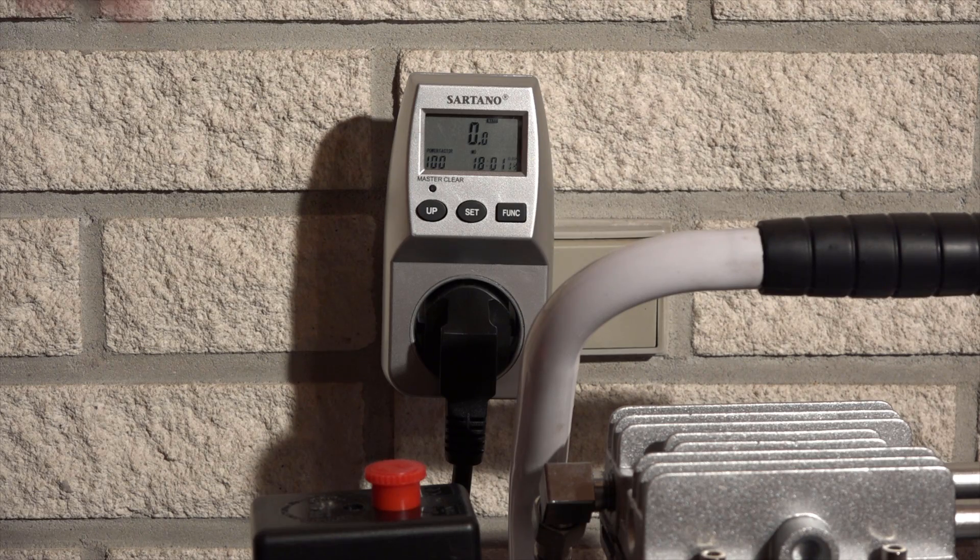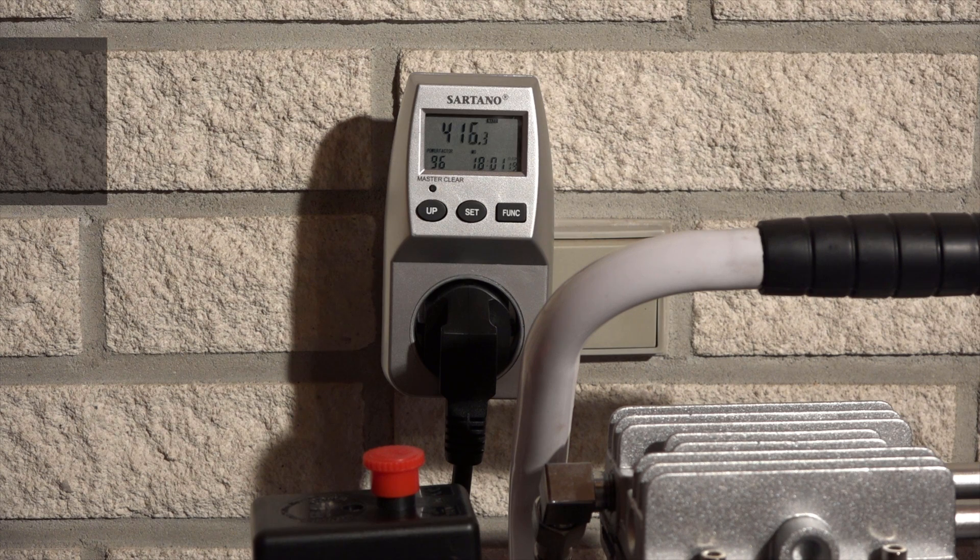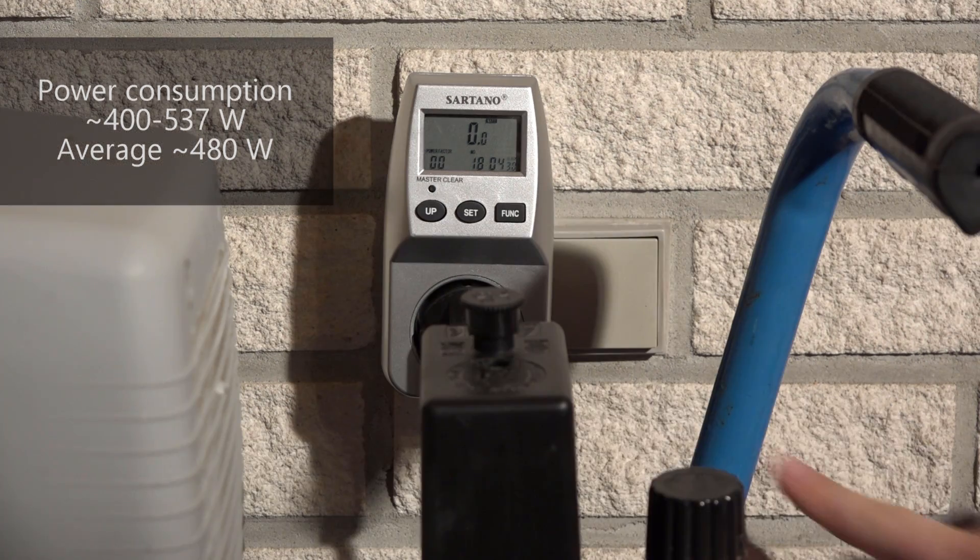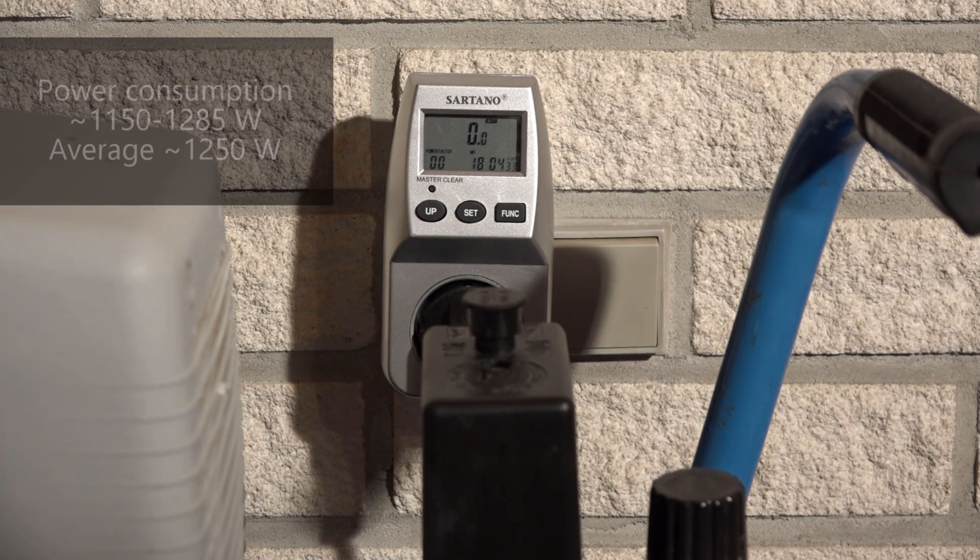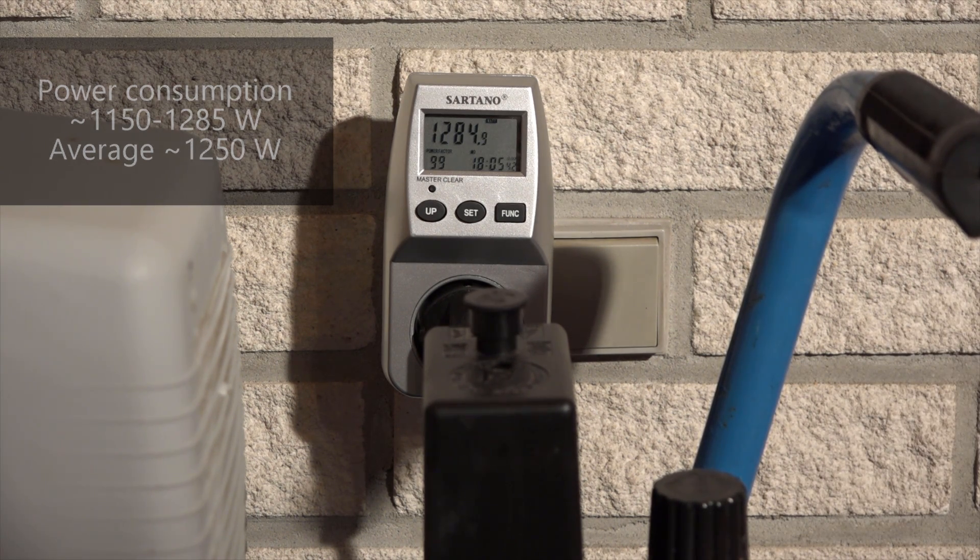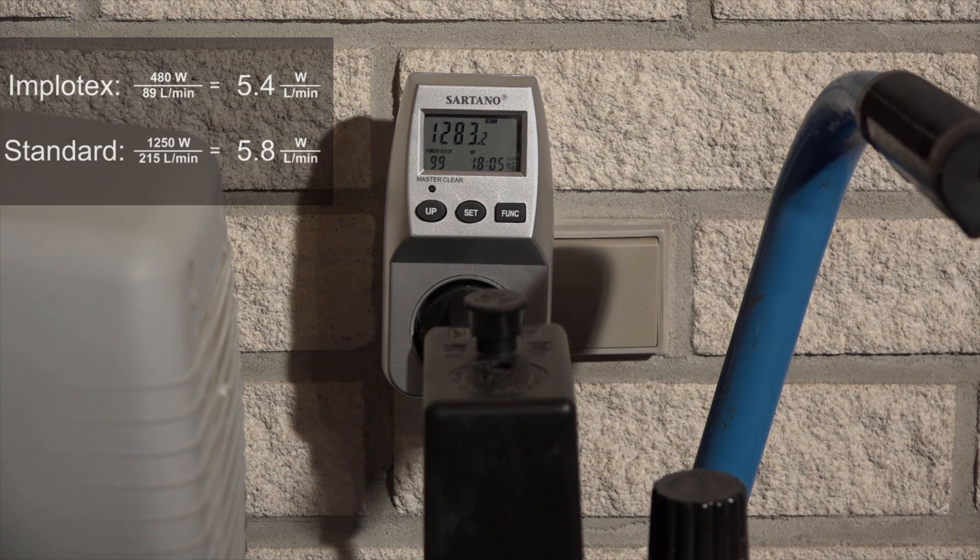Clearly the balance point isn't the same for all sizes. Back to the review. Let's take a look at power consumption. The Implotex draws between 400 and 537 watts averaging around 480 watts. The other one draws much more with an average around 1250 watts. For the same air volume the power consumption is close but a little better on the Implotex.